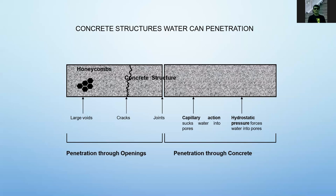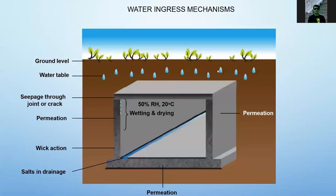Concrete has the characteristic that water can penetrate through its structures. Water also has certain mechanisms to penetrate: there is permeation, where water penetrates the wall; and wicking action, where water is absorbed through dampness and penetrates to the upper side of the structure. Another mechanism is salt in the drainage — salt can produce moisture if stored over days or weeks.